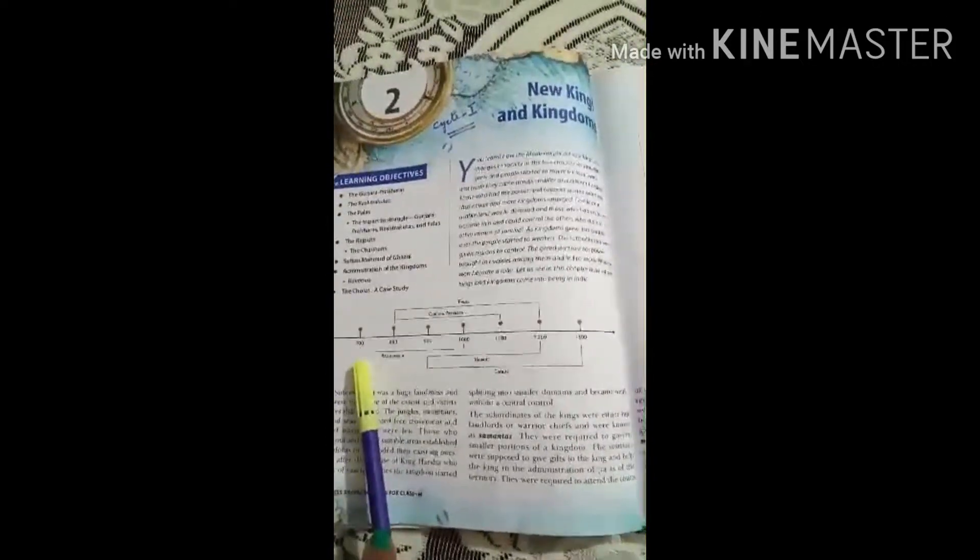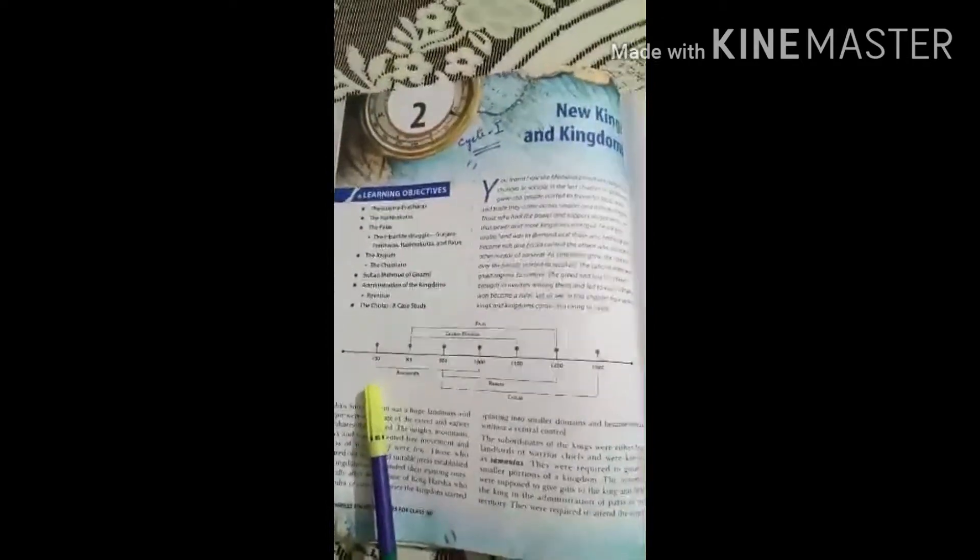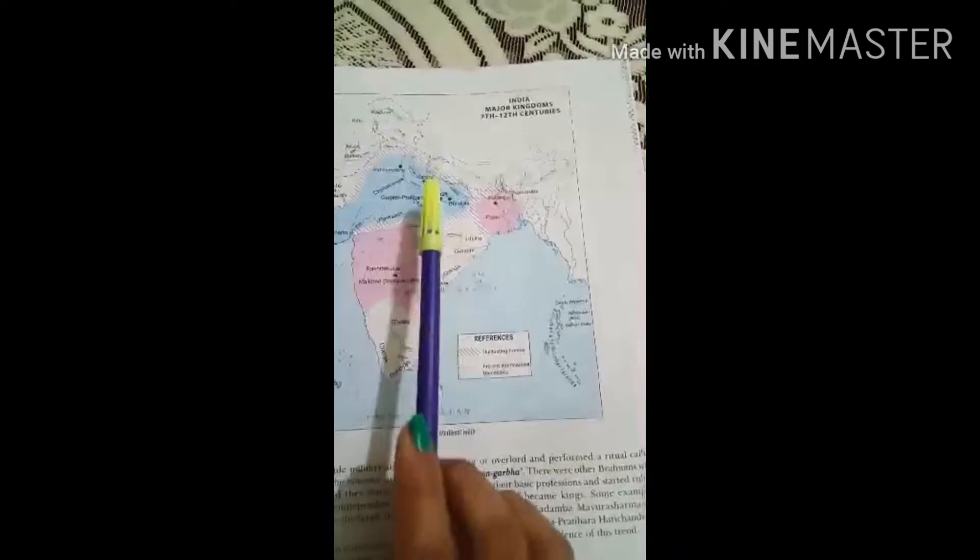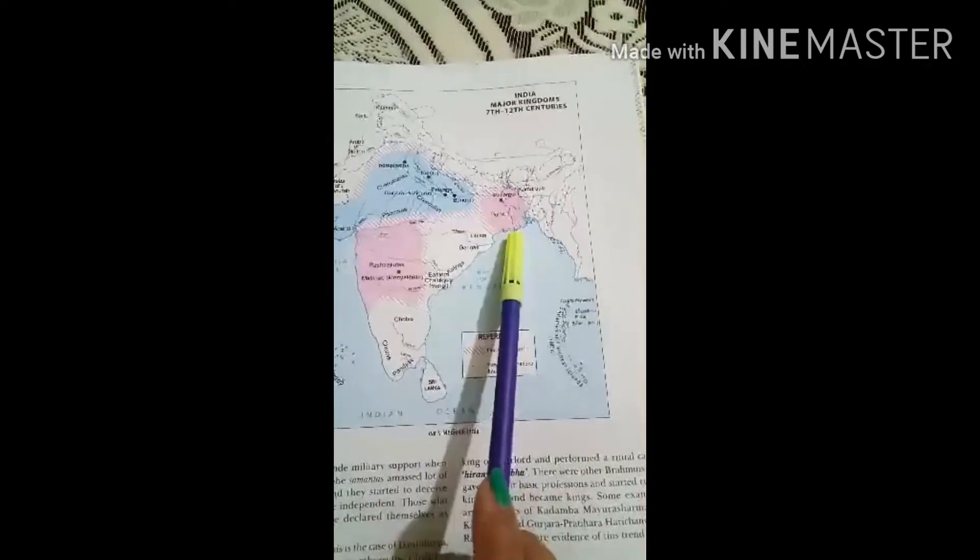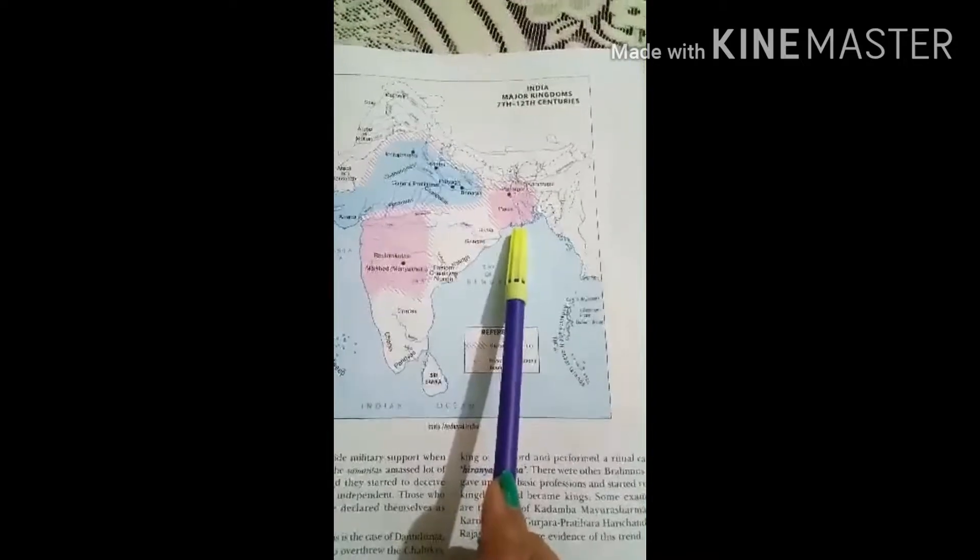In last lectures children, we studied about Tripartite struggle. It was a struggle between the Rashtrakutas, the Gurjara-Pratiharas in the north, and the Palas in the east.